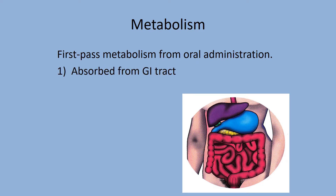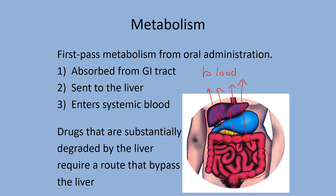First-pass metabolism: anything absorbed in the GI tract doesn't go directly to the blood — it's sent to the liver first as a checkpoint, giving the liver a chance to deactivate any ingested poison. After the liver's first pass, nutrients and drugs enter the systemic blood supply. Many drugs are deactivated by this process, so an alternative route may be needed — for example, sublingual (under the tongue) administration bypasses first-pass metabolism, as with nicotine from chewing tobacco passing directly through the oral membrane into the blood.